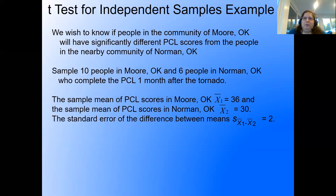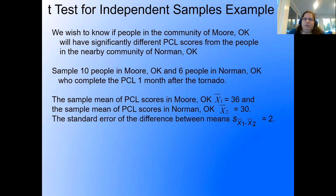Let's run through an example. We wish to know if people in Moore, Oklahoma will have significantly different PCL scores from people in Norman, Oklahoma. We sample 10 people in Moore and six people in Norman who complete the PCL one month after the tornado. The two different sample sizes are fine — our formulas handle that. X̄₁ = 36 (Moore), X̄₂ = 30 (Norman), the standard error of the difference between means is 2, N₁ = 10, N₂ = 6.